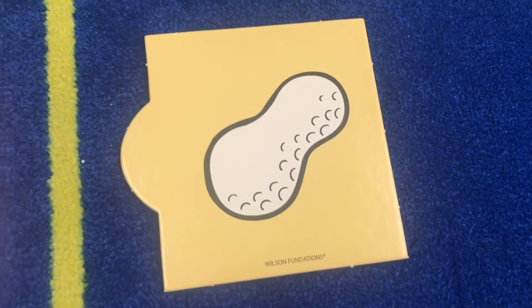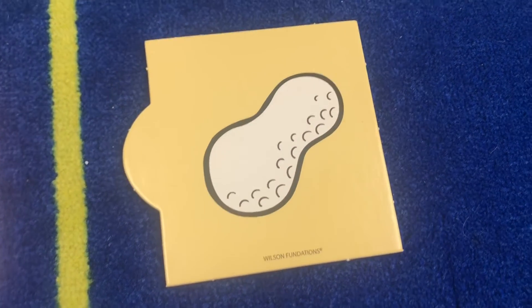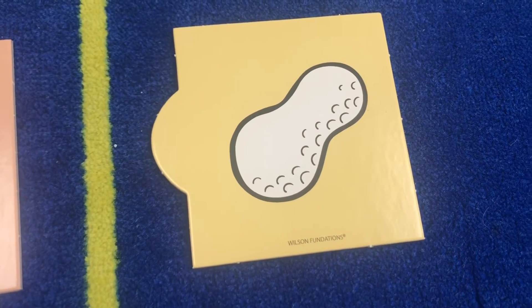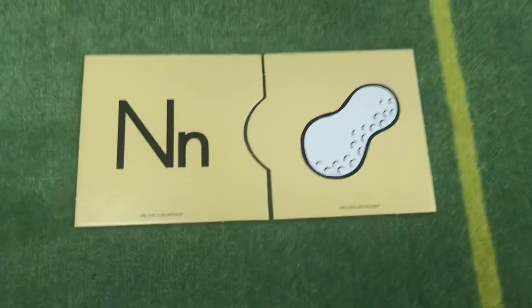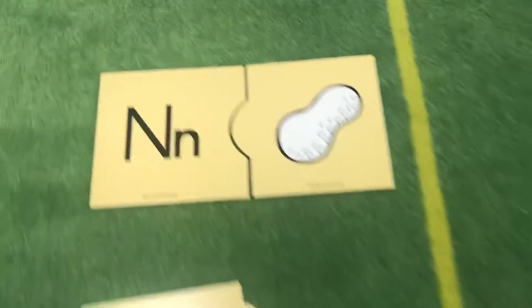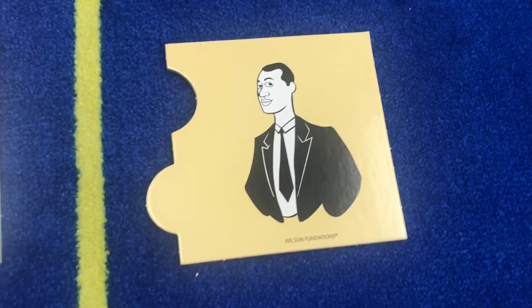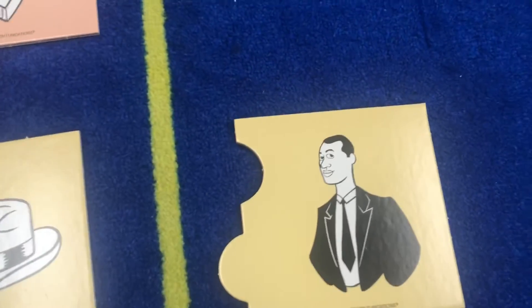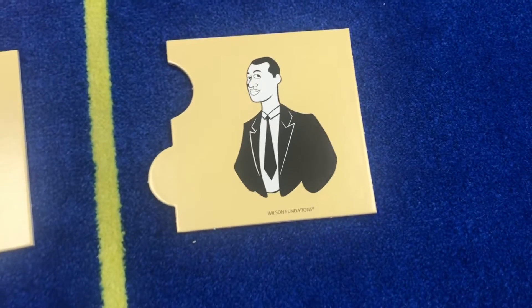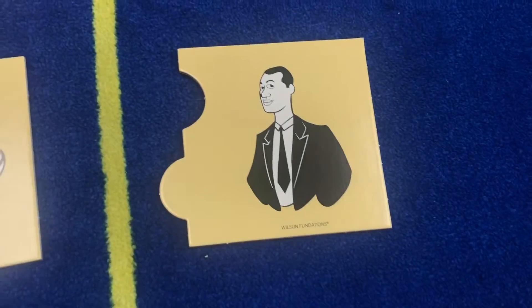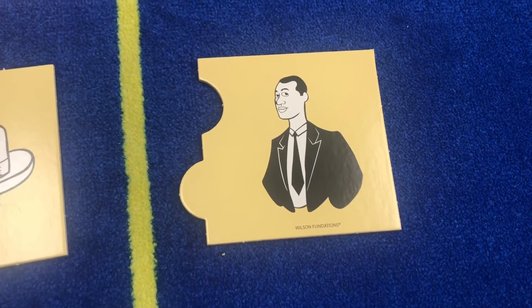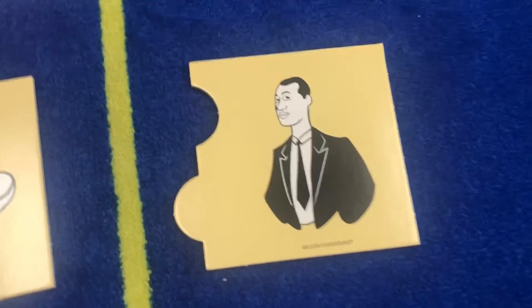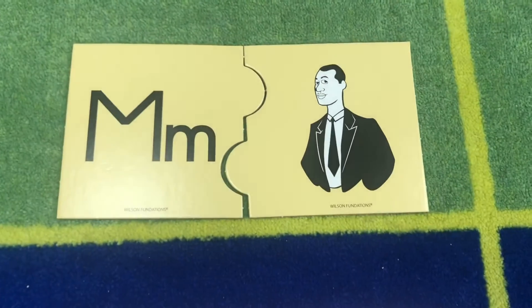This is a nut. Nut. What does nut start with? N is correct. N, nut. What is this a picture of? This is a man. Say man. What does man start with? M is correct. Good job. M, man.